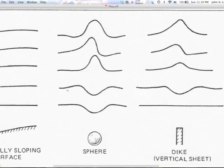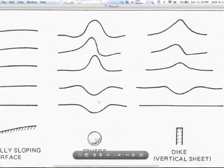At the magnetic equator in a north-south profile with horizontal lines of force, you get broad positives and a central negative. If you survey in the east-west direction, you see that central negative. These are the patterns for different locations around the world.